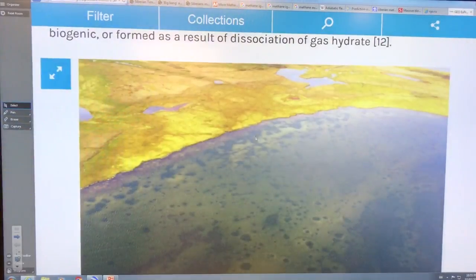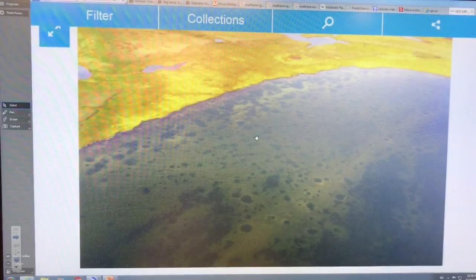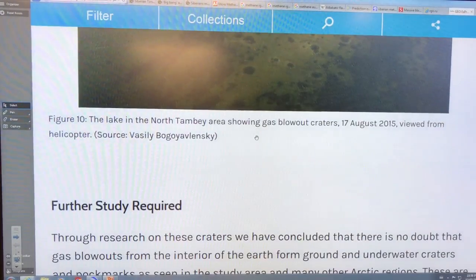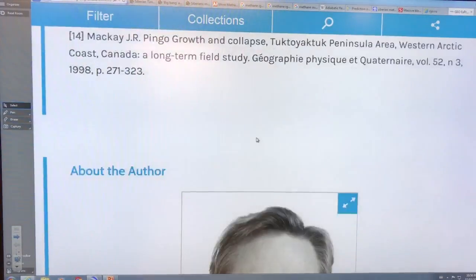So we're finding these things all over. Here's a lake and look at all the holes inside the lake. Looks like methane is coming out. And there's little craters there.